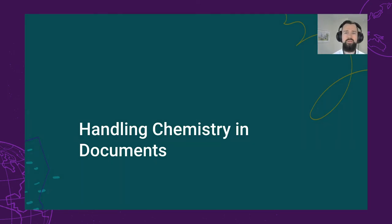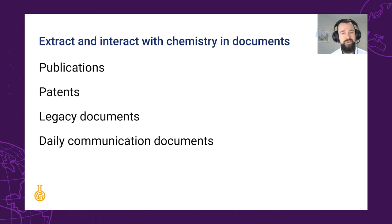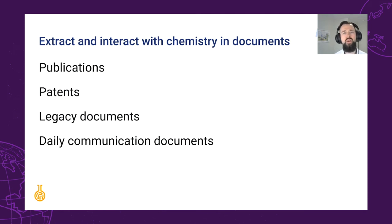Despite all our talk of chemical databases, the sharing and handling of chemistry in documents is still essential to our communication and collaboration, particularly when it comes to patents, journals, and other external collaborators' information. Publications and patents are released continuously, mandating the need to handle and extract such documents. The same is true for historic internal documents, particularly at large enterprises, where the extent of such files makes it wholly impractical to do so manually. Frequent communication, documentation, and other curation of day-to-day work also requires us to be able to add, edit, and manipulate chemistry within a document.